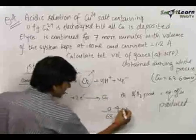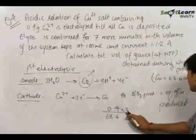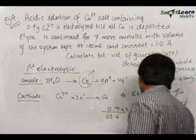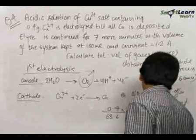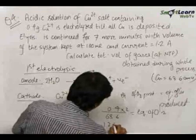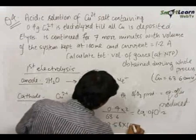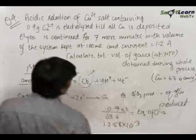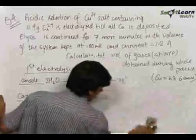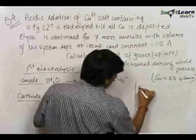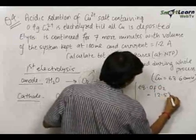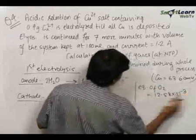So 0.4 upon 63.6 into 2 — that is the valency factor — equals the equivalents of O₂ produced, which comes out to be 12.58 × 10⁻³. Let us record it: equivalents of O₂ produced in the first electrolysis equals 12.58 × 10⁻³.